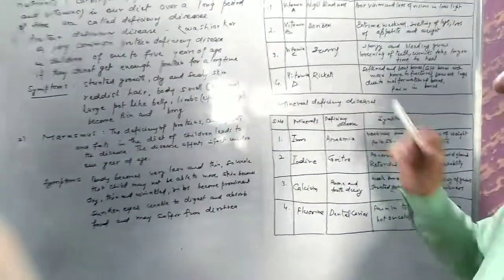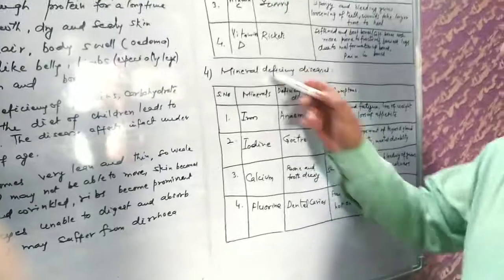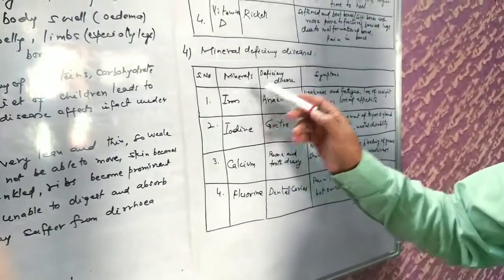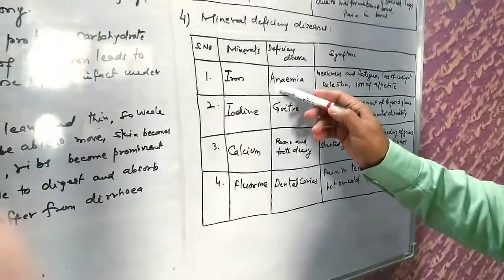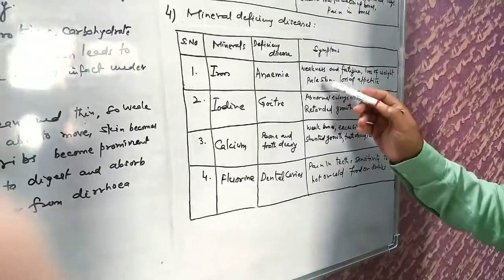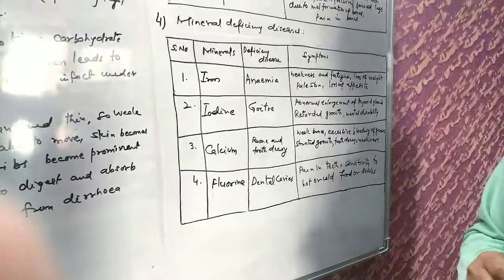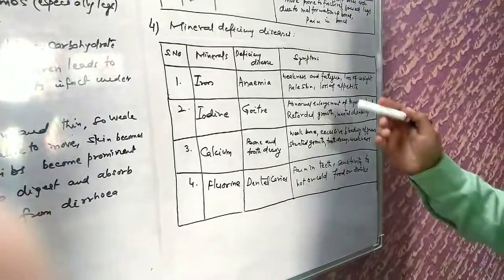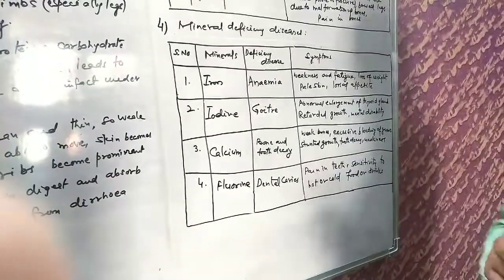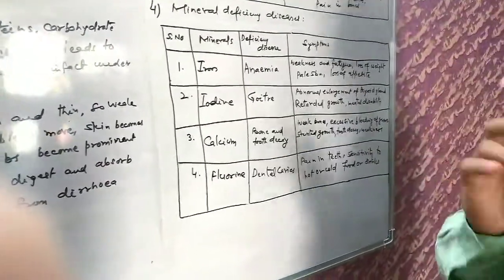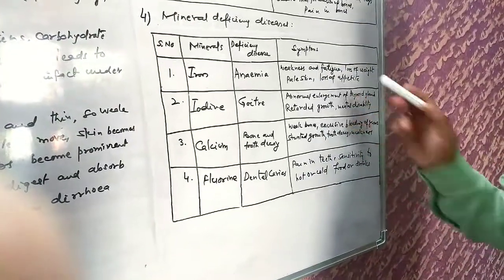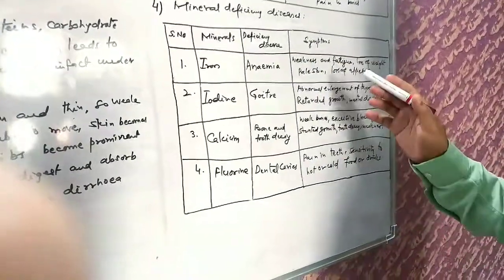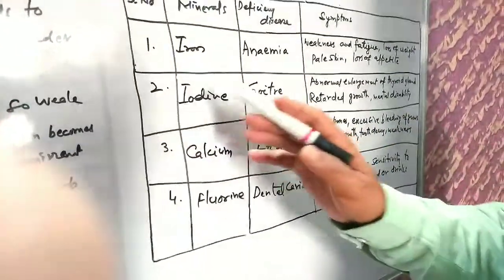Mineral deficiency diseases. I have given you this in a table. Name of the mineral is iron. Due to deficiency of iron, anemia occurs. What are the symptoms? Weakness and fatigue - with little effort you start feeling tired. Loss of weight, pale skin, loss of appetite. Second ingredient is iodine.